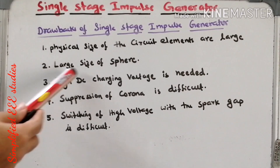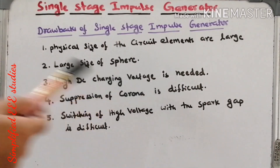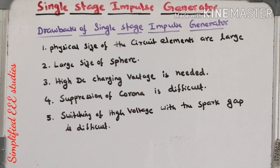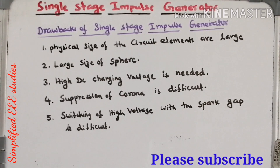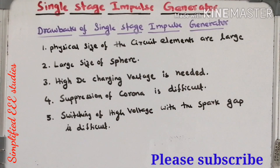The second drawback is that a large size sphere gap is required. The sphere gap acts as a switch, but we require a very large sphere gap which is totally undesirable. Third, a high DC charging input voltage is needed. Fourth, suppression of corona is difficult; it may cause errors and is a major difficulty. Fifth, switching of high voltage with the sphere gap is difficult.